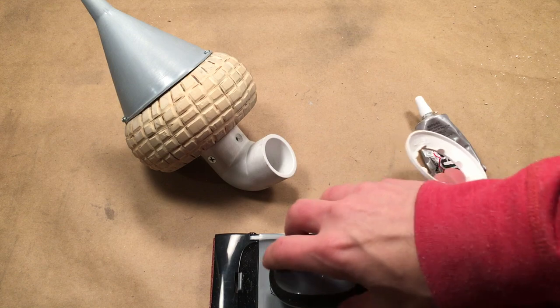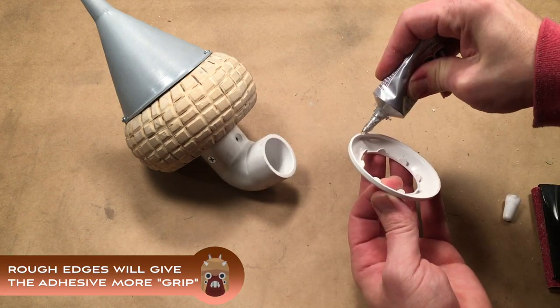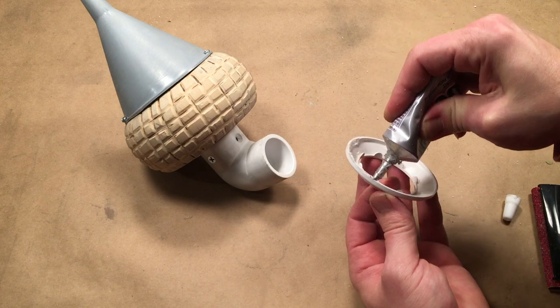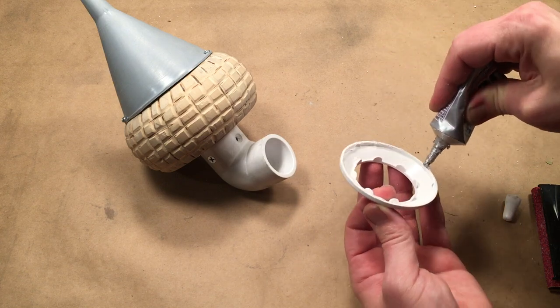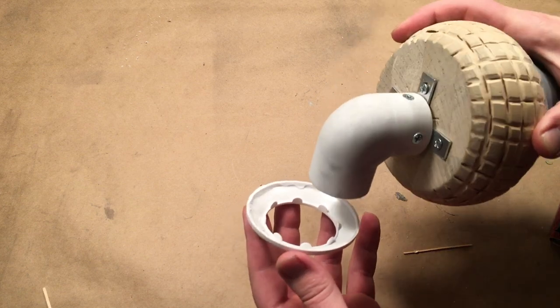Using some 120 grit sandpaper, sand the back edge of the shallow flange. Apply some E6000 adhesive and place the flange over the PVC elbow and secure it to the sofa bun. Allow the adhesive to dry for 24 hours.